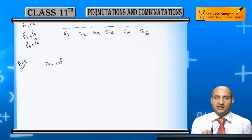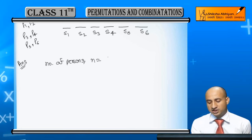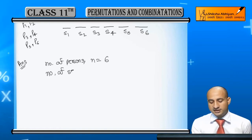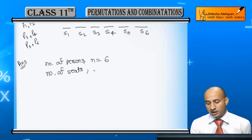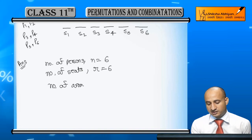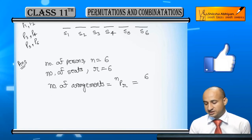So, what is the number of persons? N is equal to 6. And the number of seats? R is also 6. So the number of arrangements will be NPR, which is 6P6.